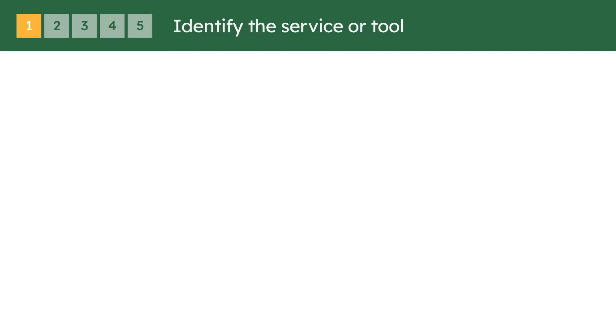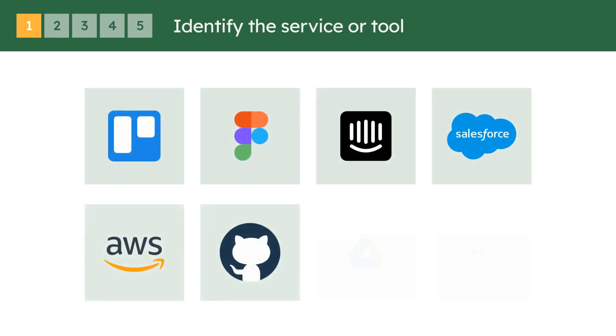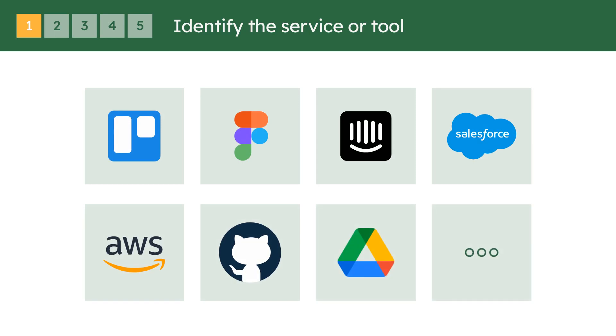Step 1: Identify the service or tool you need access to. It could be anything from a project management app like Trello, to a file-sharing platform like Google Drive.